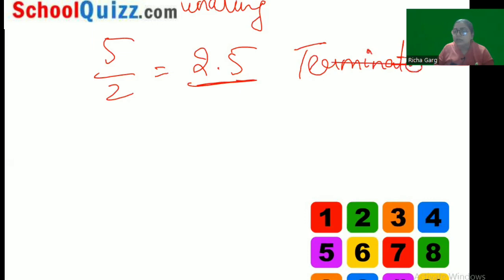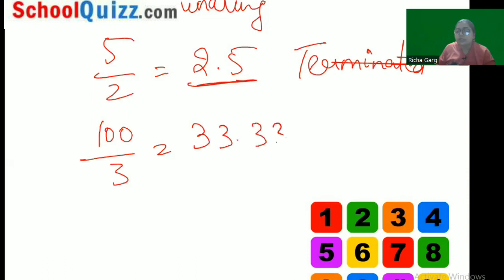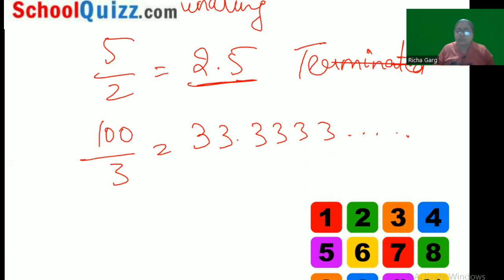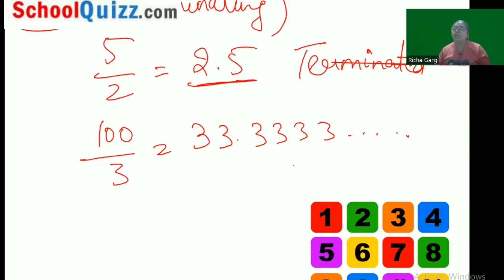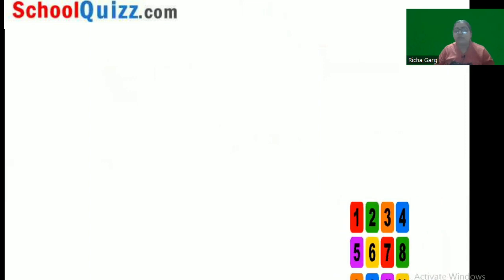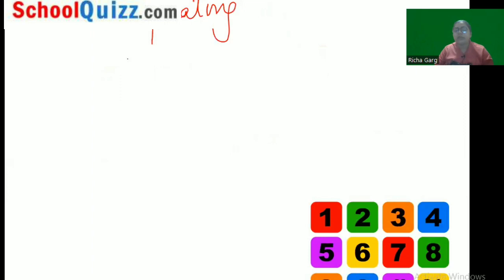But if I take a number like 100 by 3, which is 33.3333... and we don't know how many threes are coming — this number is non-terminating. So the first word we learn today is non-terminating. The number 33.3333... is a number which never ends, which is never going to terminate — that is our non-terminating number.